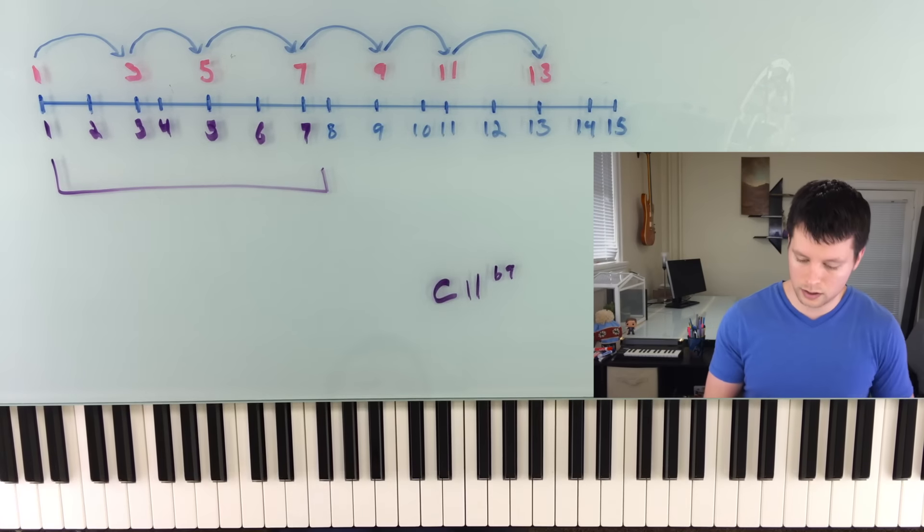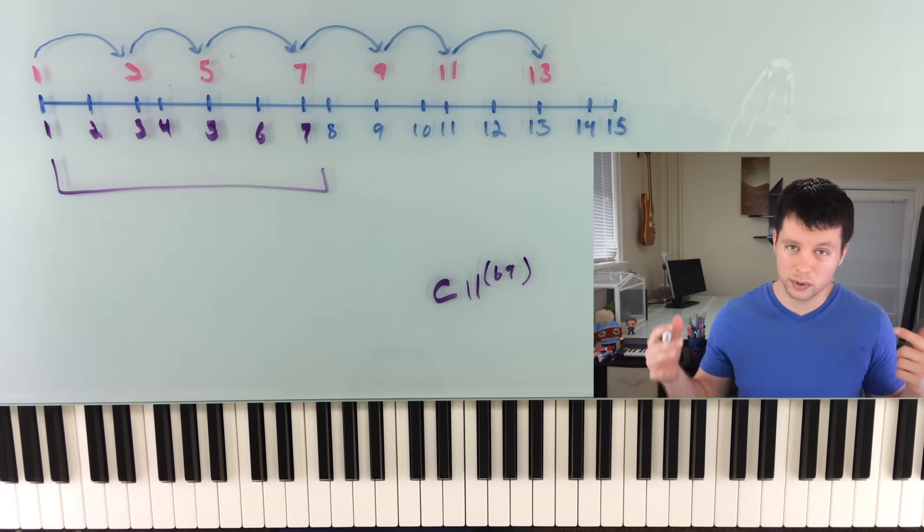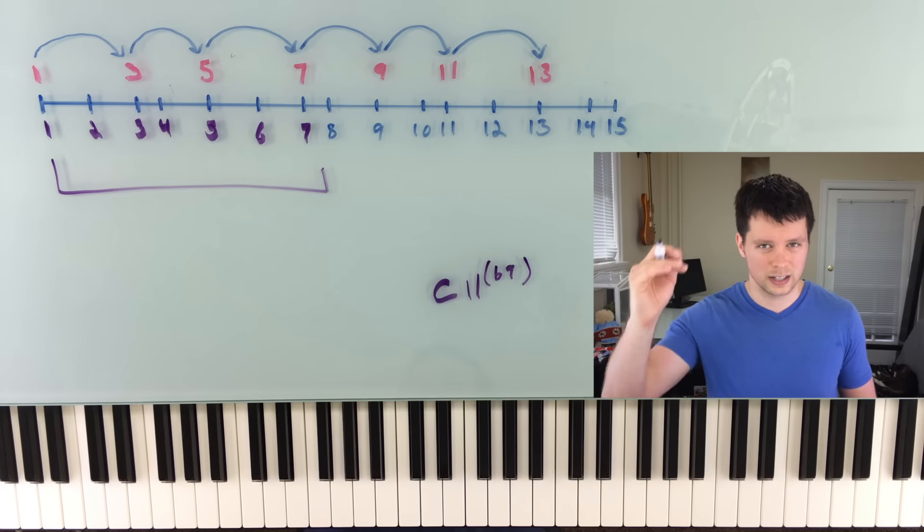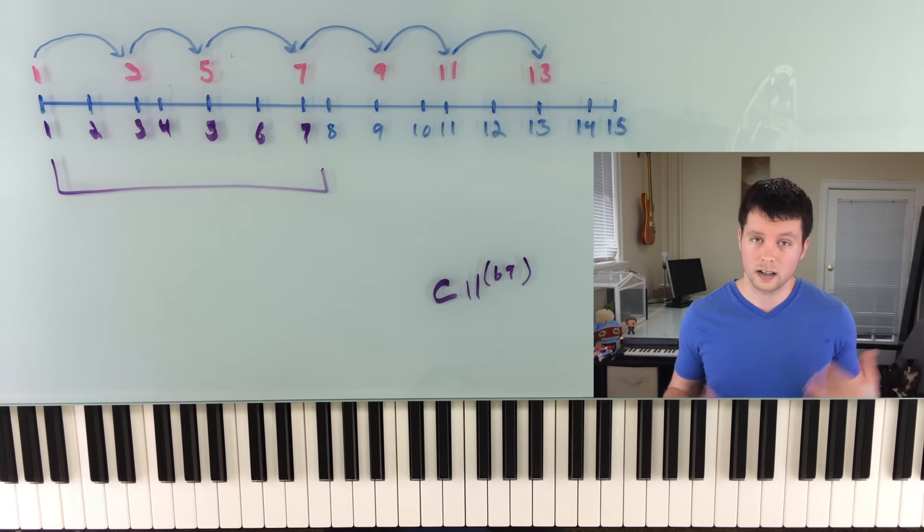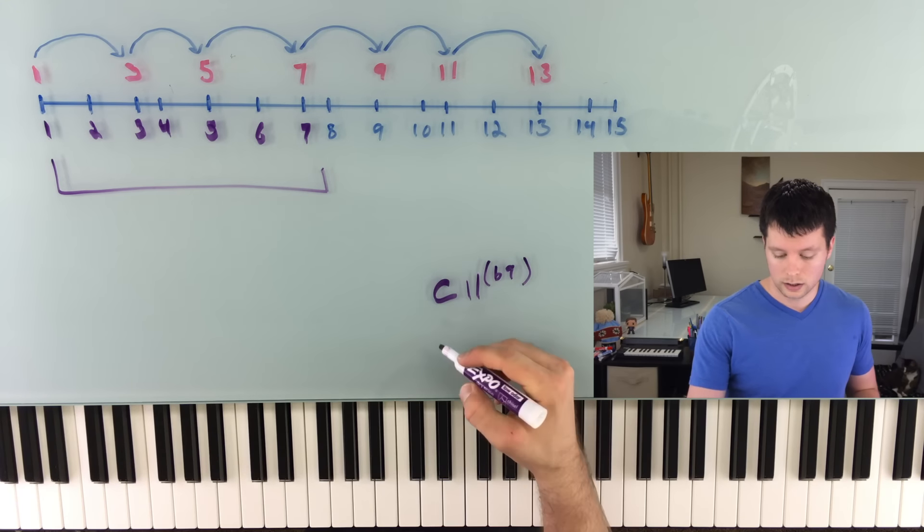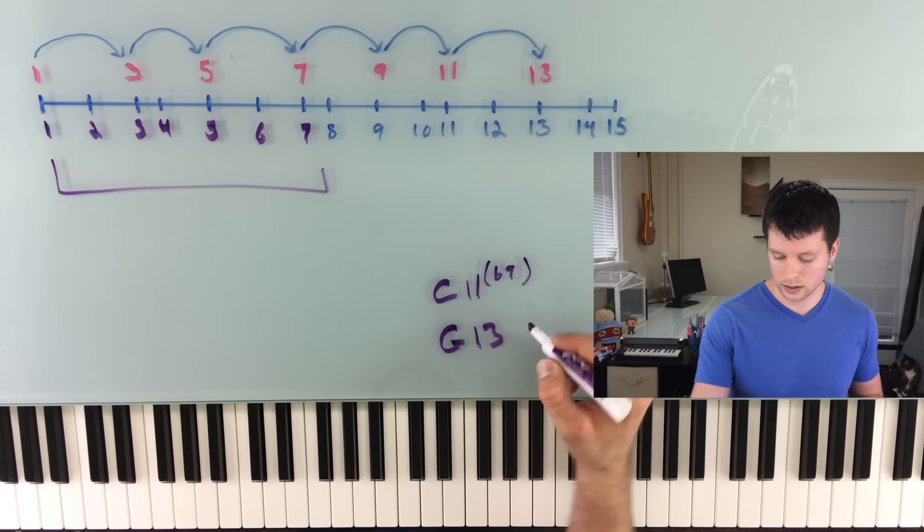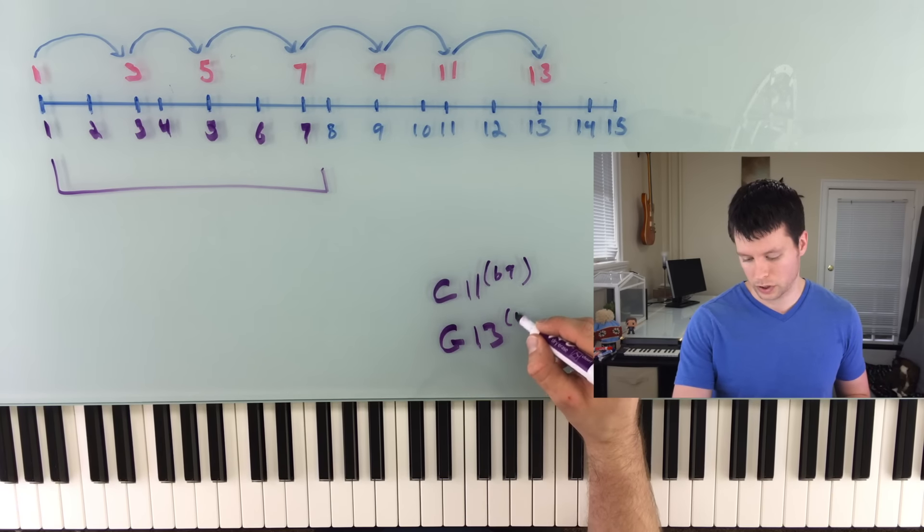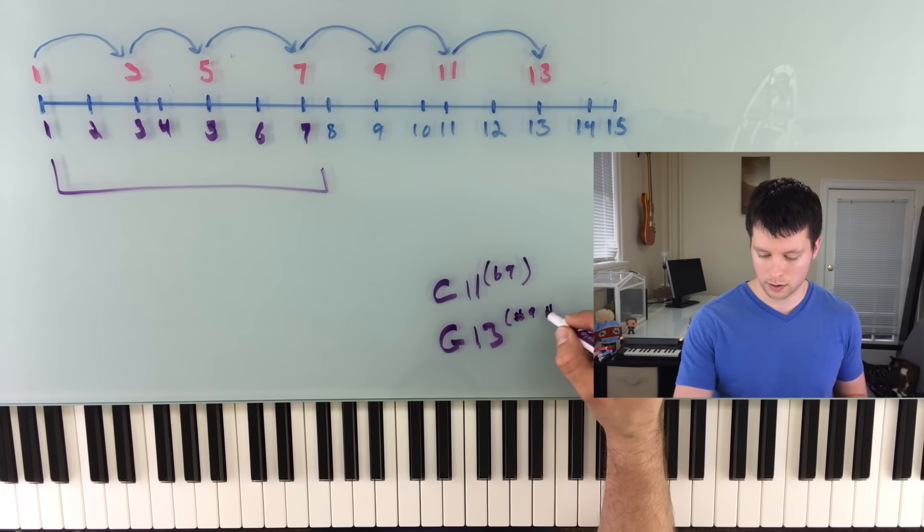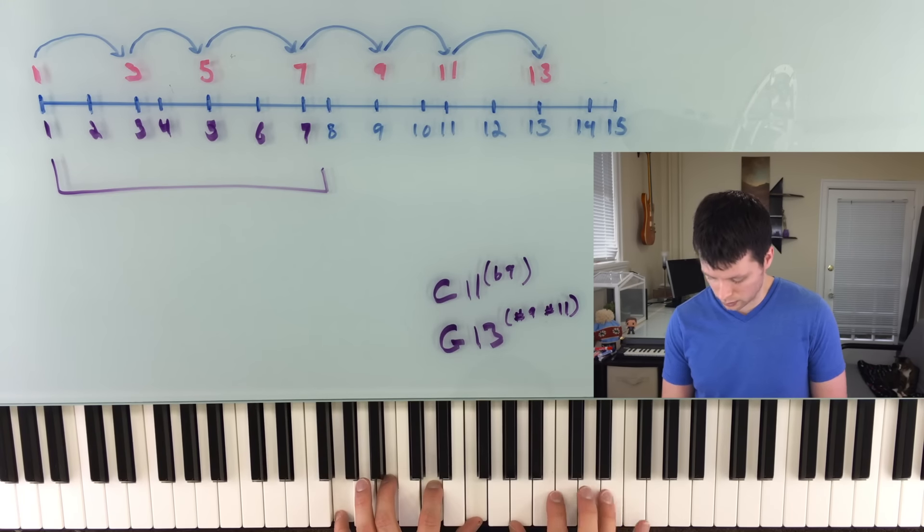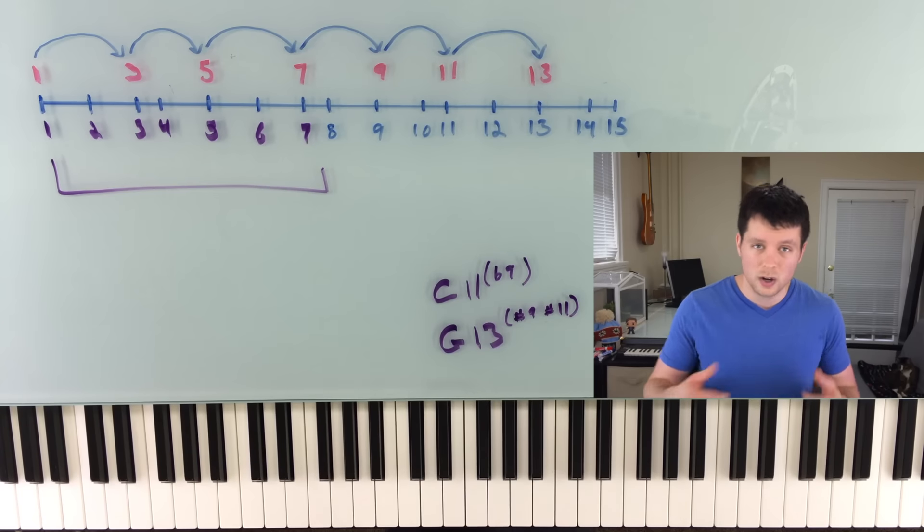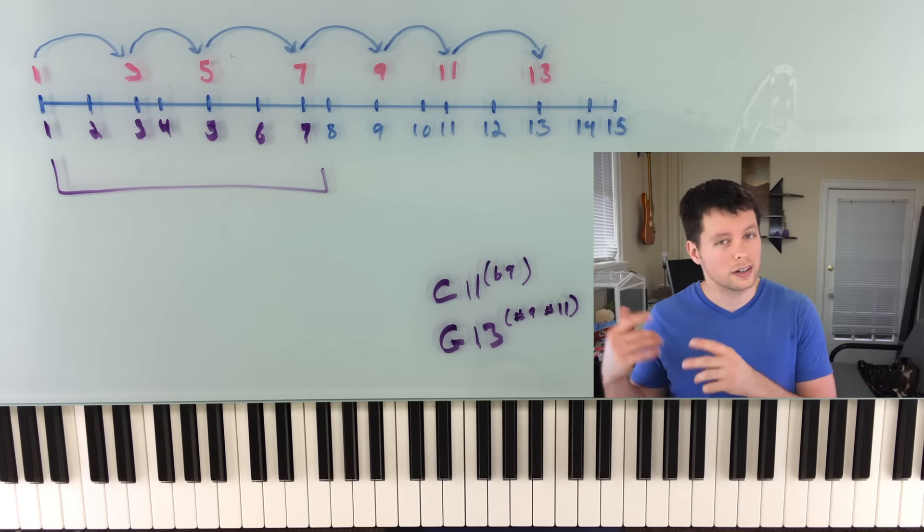And pretty often, these are written in parentheses. So it'd look like that. Sometimes not. They're almost always written in superscript. So it's kind of tiny and raised up a little bit. Although if you're reading some random blog article, a lot of people don't know how to make the text superscript. So you'll just see this big, long mess of letters and numbers. But that's usually how it's written. Now if I want to do something like a G dominant 13 sharp nine, sharp 11, it would look something like that.